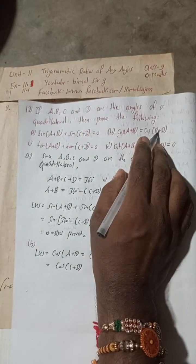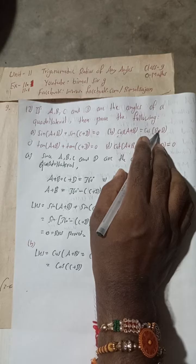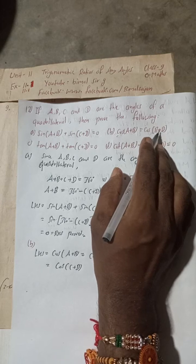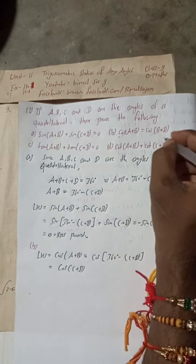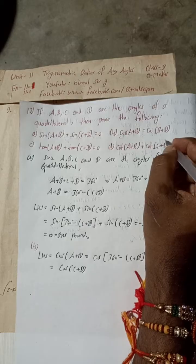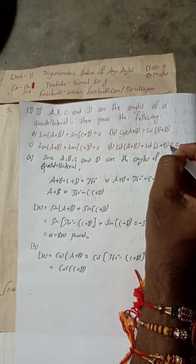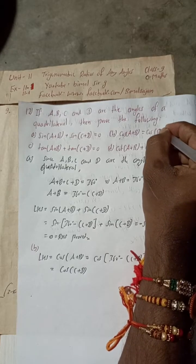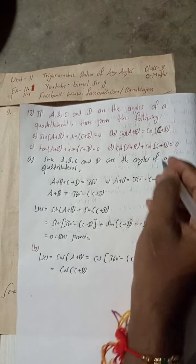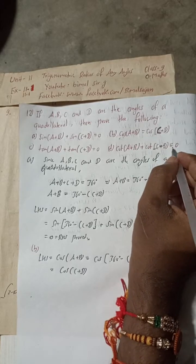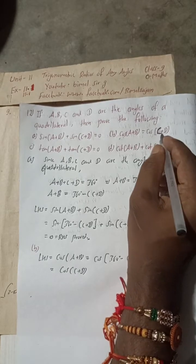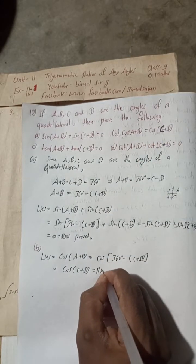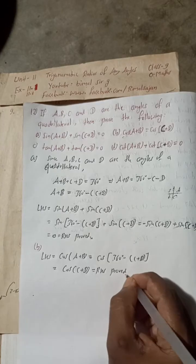Note: the textbook has a print mistake writing B+D instead of C+D in part B, but the correct answer is cos(C+D). So LHS = cos(C+D) = RHS. Proved.